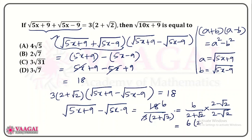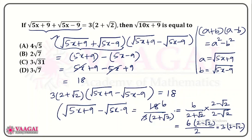This gives us 6 times (2 minus root 2) in the numerator. The denominator is again in the form (a + b)(a − b), giving a² minus b², which is 4 minus 2 equals 2. So we get 6(2 minus root 2) divided by 2, which simplifies to 3 times of (2 minus root 2). We now know that root of 5x plus 9 minus root of 5x minus 9 equals 3(2 minus root 2).